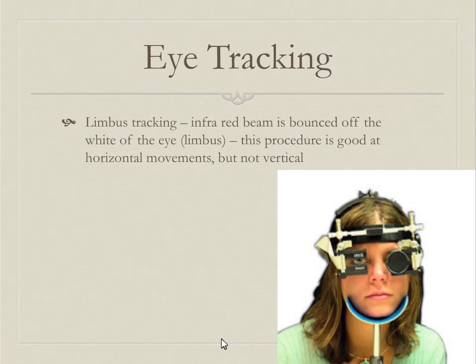Limbus tracking uses an infrared beam — safe for you — bounced off the white of your eye, or the limbus. That procedure is pretty good at tracking horizontal movement of your eyes but not vertical up-and-down movement. It looks similar to an eye doctor's system. They measure horizontal eye movement, but they're not so good vertically because the reflection doesn't change well when you look up.